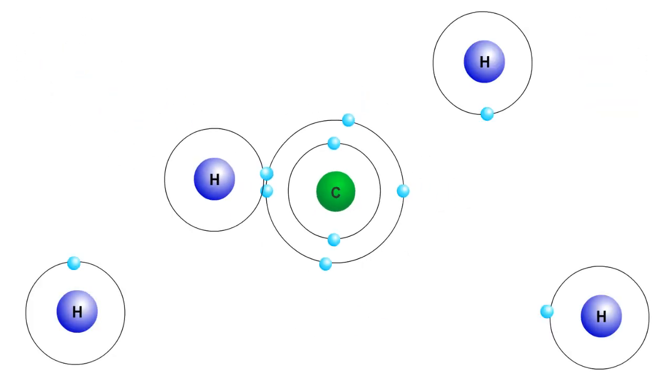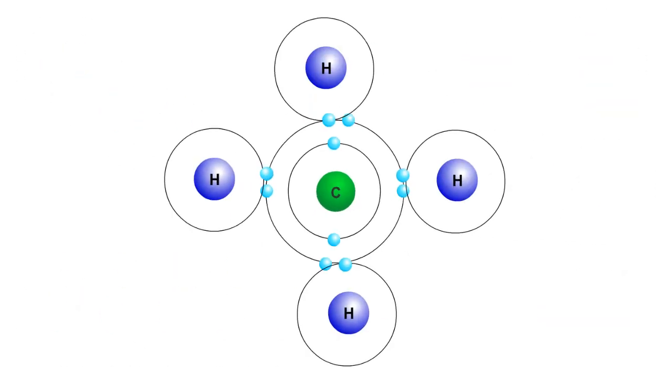When atoms form a covalent bond, they do not always share their electrons equally. This is because atoms differ in their electronegativity, or their ability to attract electrons.